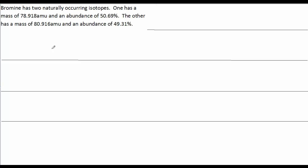Just a quick note on these percentages. If you had a pile of bromine, 50.69% of those atoms will be of this particular isotope weighing 78.91 AMUs, and the remainder of the atoms will weigh 80.916 AMUs each.